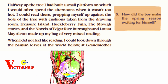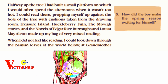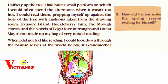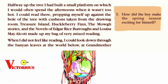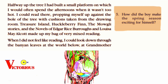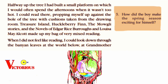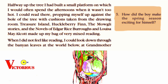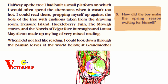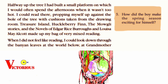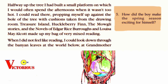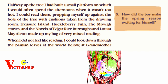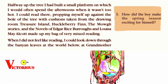Again there is a question for you — the fifth question on the right side: how did the boy make the spring season exciting for himself? The boy had built a small platform on the branches and he could read books from there. That is the right answer. Write all these questions and answers in your notebook.